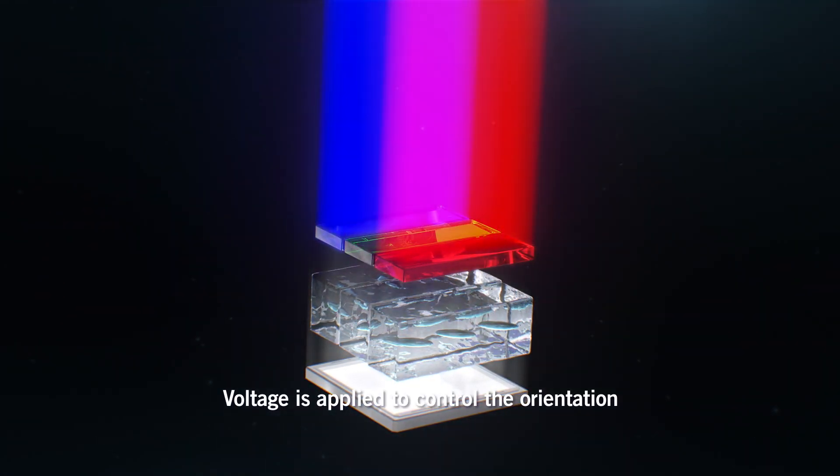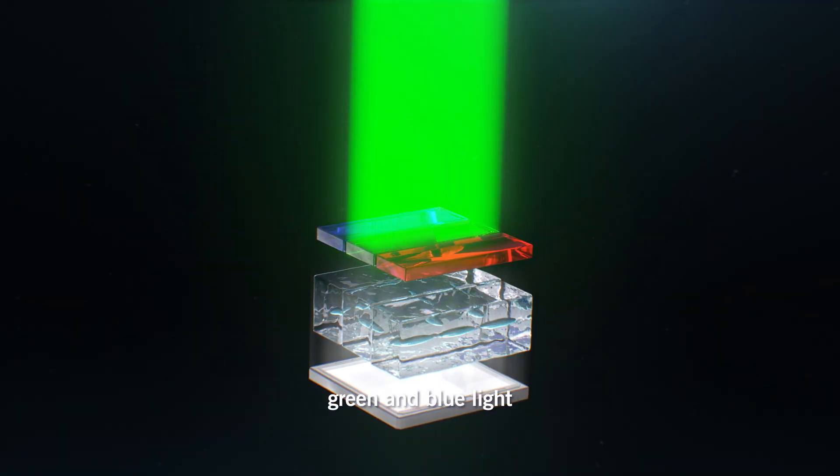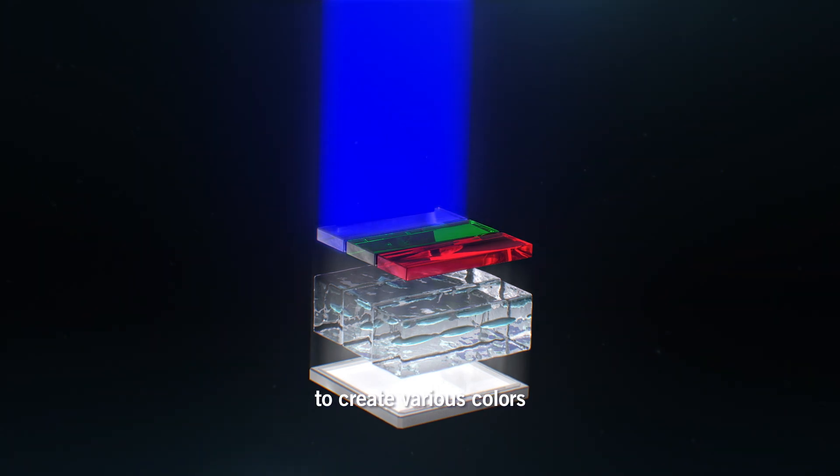Voltage is supplied to control the orientation of liquid crystals to change the proportions of red, green, and blue light to create various colors.